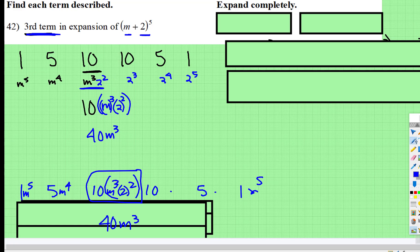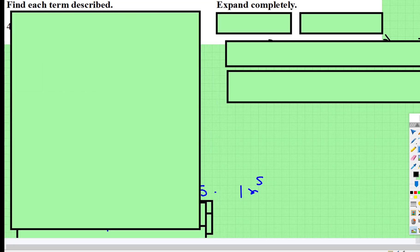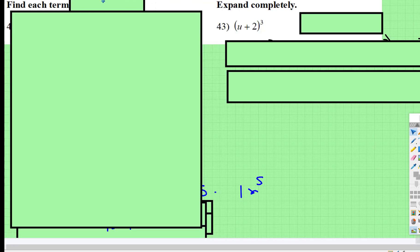So now I'm going to come over here and we're going to practice expanding one completely using Pascal's triangle. So now you've got u plus 2 cubed, so there's your 1, 3, 3, 1.